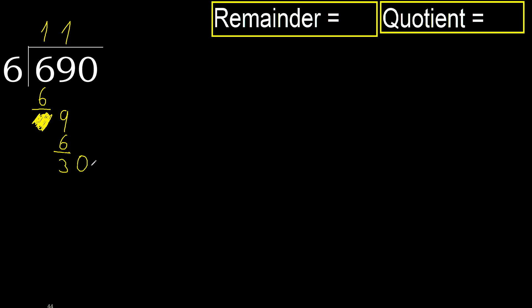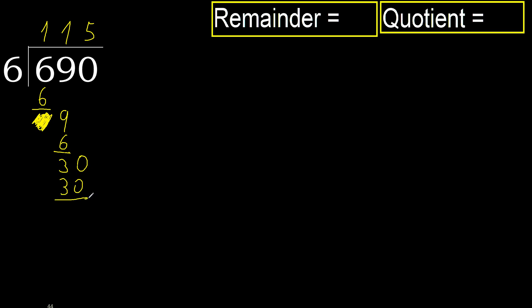Next, bring down 30. 6 multiplied by 5 is 30, which is not greater. Subtract, next.